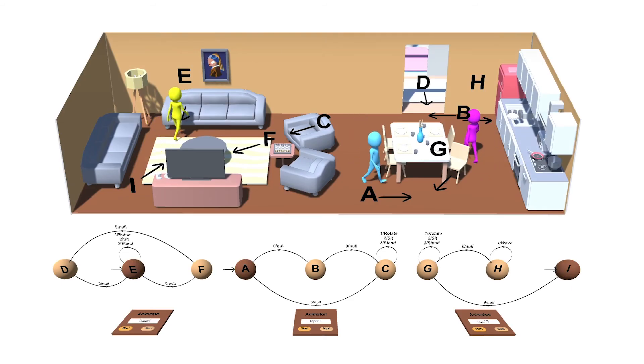This video demonstrates the animations generated within the same scene with three characters animated with three different animators simultaneously with different action sequences. This experiment validates the effectiveness of our approach to generating different animations for different characters with different storylines at the same time.